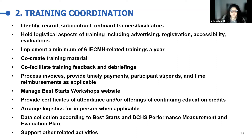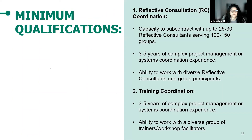Moving into the minimum qualifications: for the first body of work, Reflective Consultation Groups Coordination, the minimum qualifications include the capacity to subcontract with up to 25 to 30 reflective consultants who will be serving 100 to 150 groups, three to five years of complex project management or systems coordination experience, and the ability to work with diverse reflective consultants and group participants. For the second body of work, Training Coordination, it's three to five years of complex project management or systems coordination experience and the ability to work with a diverse group of trainers, workshop facilitators, and participants.